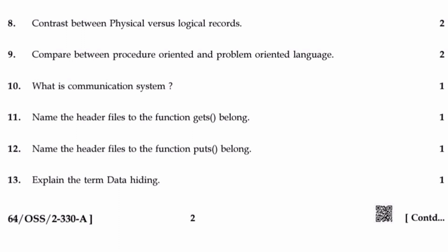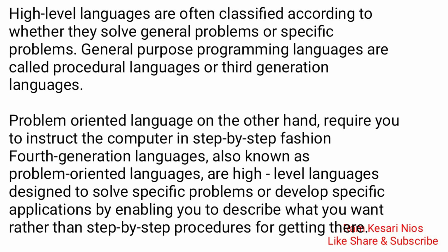Question 9: Compare between procedure-oriented and problem-oriented language. High-level languages are often classified according to whether they solve general or specific problems. General-purpose programming languages are called procedural languages or third-generation languages. Problem-oriented languages, on the other hand, are fourth-generation languages — also known as high-level languages — designed to solve specific problems or develop specific applications by enabling you to describe what you want rather than step-by-step procedures for getting there.